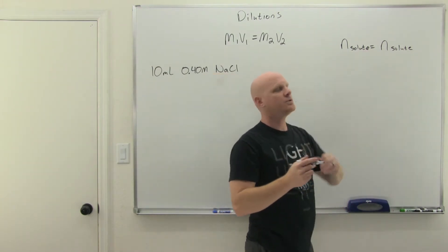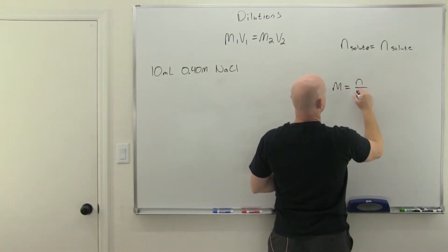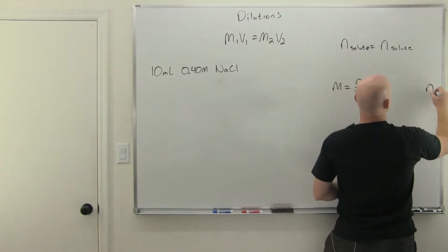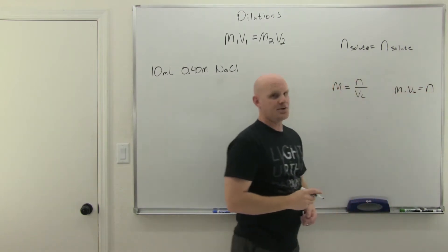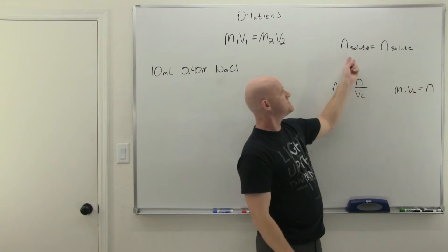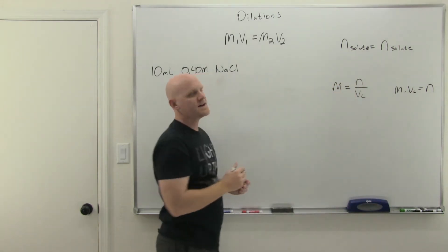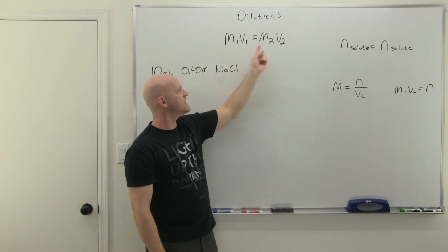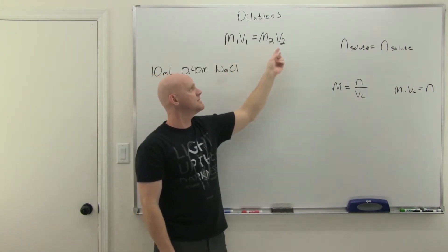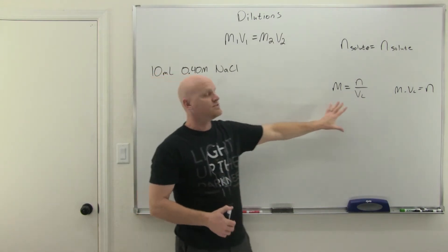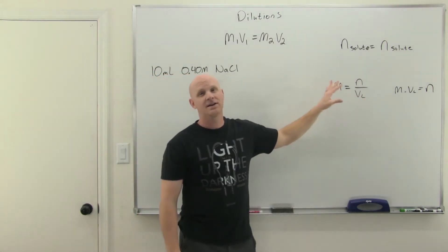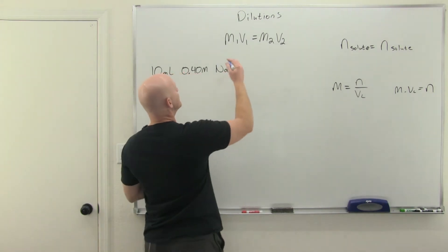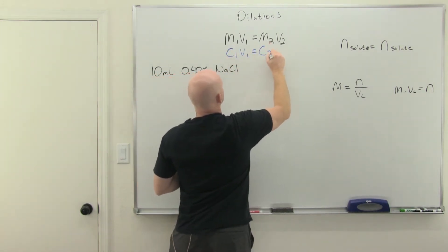So before and after. Molarity is equal to the moles of solute over the volume in liters of the solution. If you rearrange and solve for moles, moles equals molarity times volume in liters. Substituting that into the expression, we get the classic dilution equation: M1V1 = M2V2, where M stands for molarity — initial and final — and V stands for volume — initial and final. This can also be written as C1V1 = C2V2, since any unit of concentration can be used.